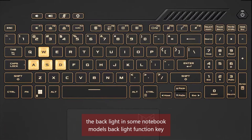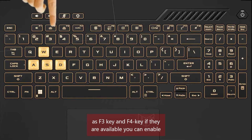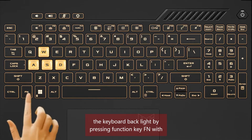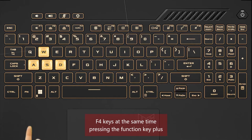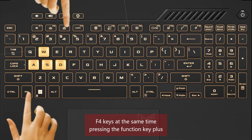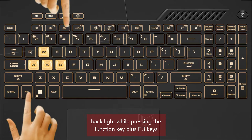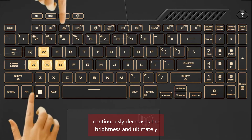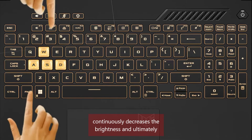In some notebook models, the back light function keys are F3 and F4. You can enable the keyboard back light by pressing the function key (Fn) with F4 at the same time. Pressing Fn + F4 continuously increases the brightness, while pressing Fn + F3 continuously decreases the brightness and ultimately disables the back light.